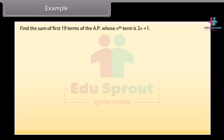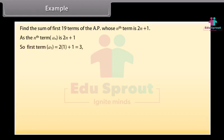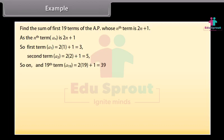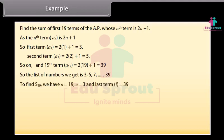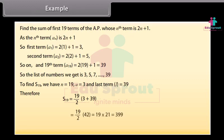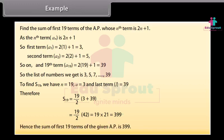Find the sum of first 19 terms of the AP whose nth term is 2N plus 1. As the nth term AN is 2N plus 1, the first term A1 is equal to 2 into 1 plus 1 which is 3. Second term A2 is equal to 2 into 2 plus 1 which is 5, and so on. The 19th term is equal to 2 into 19 plus 1 which is 39. So the list of numbers is 3, 5, 7, ..., 39. To find S19, we have N as 19, A as 3, and L as 39. Therefore, S19 is equal to 19 upon 2 into (3 plus 39), which is 19 upon 2 into 42, which equals 19 into 21, which is 399. Hence the sum of first 19 terms of the given AP is 399.